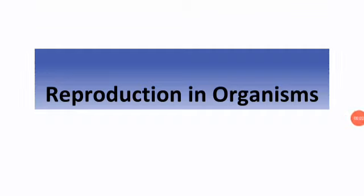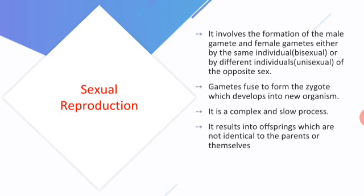Hello students, this is Mrs. Sonal Patil. We had begun with the chapter Reproduction in Organisms. In our first session we completed asexual reproduction, in the second session we studied vegetative reproduction and vegetative propagules. In today's session we will study sexual reproduction. Sexual reproduction involves formation of the male and female gametes, either by the same individual or by different individuals.